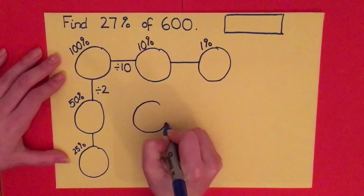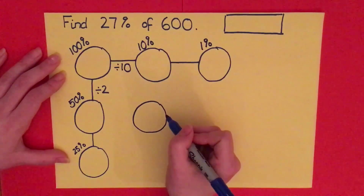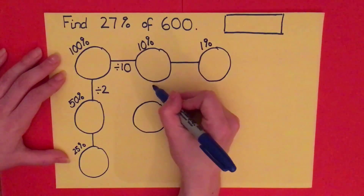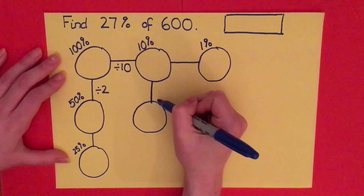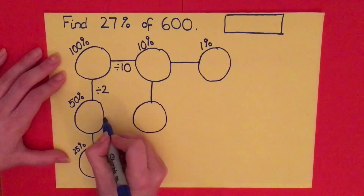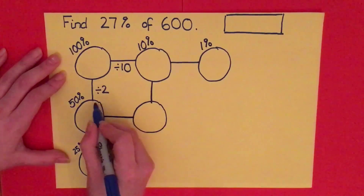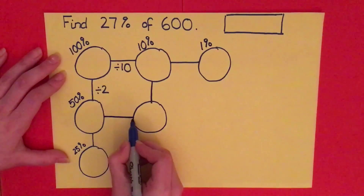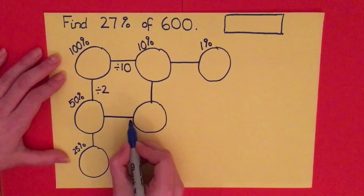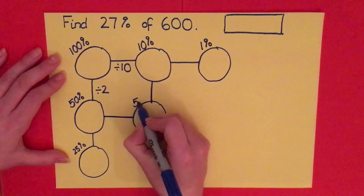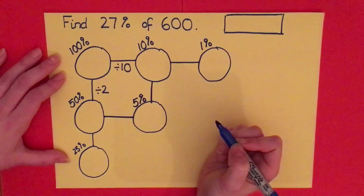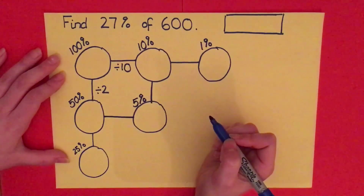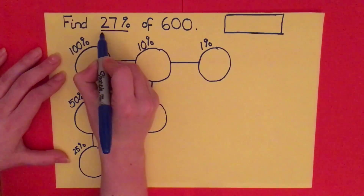There's one last bubble — can you guess what it's going to be? You can either go down from the 10% bubble and halve it, or go right from the 50% bubble and divide by 10. This bubble is worth 5%.